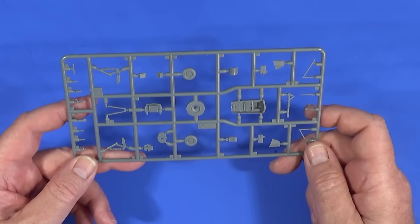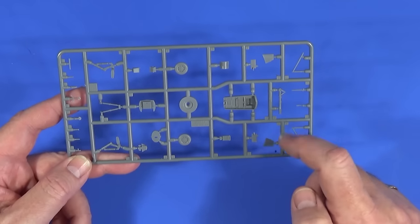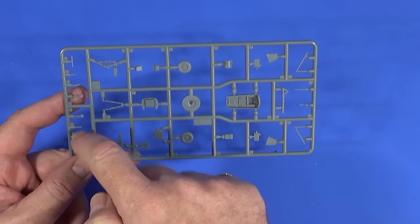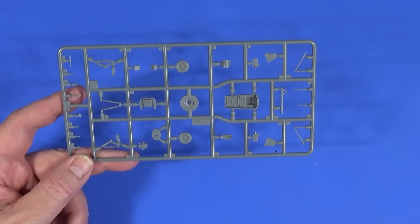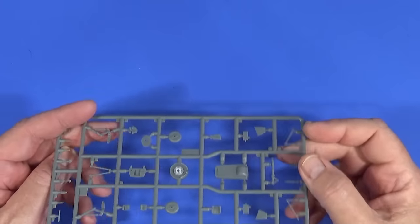Then in frame E we have pretty much everything else: the rest of the cockpit detail here, undercarriage parts, wheels and so on, and all the little sort of inlets and intakes and things like that that clutter up many a 1960s aircraft.